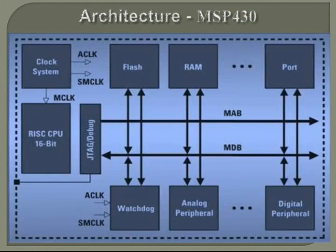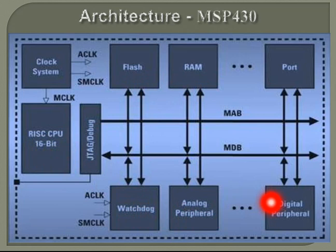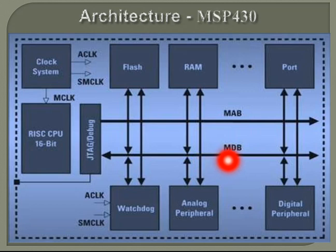Now let us see the architecture of the MSP430. Looking at the architecture diagram, you can see it consists of a clock system with ACLK (auxiliary clock) and SMCLK (sub-main clock), flash/RAM, a 16-bit RISC CPU, a watchdog timer, analog peripherals, digital peripherals, MAB (Main Address Bus), and MDB (Memory Data Bus). We will discuss each of these one by one.